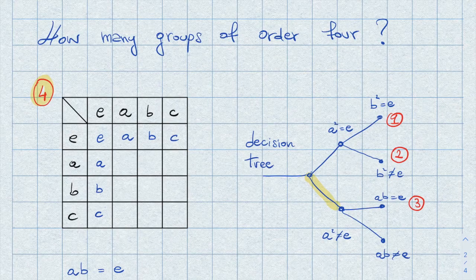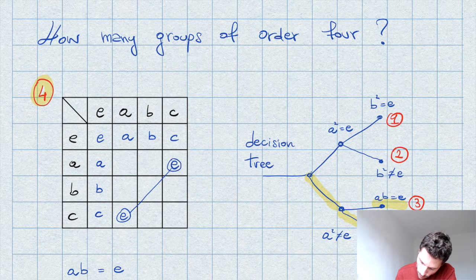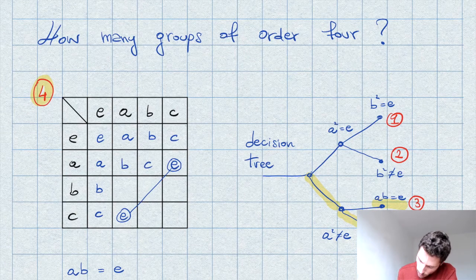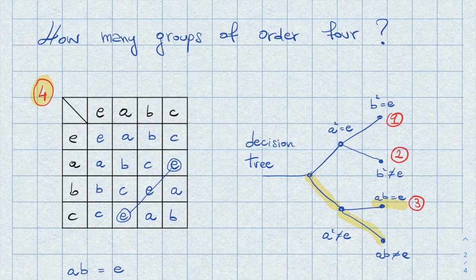Now we move on to complete the table for the fourth group. As we chose a different inverse for A previously — choosing B — now we must go down the branch where the inverse of A is C, so A times C equals E and C times A equals E. There is then no other way to complete this table than filling in B, C, E, A, A, and B in the remaining positions. This is the table of group 4.